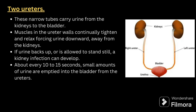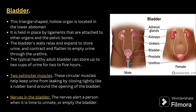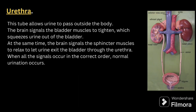The urinary bladder is a triangle-shaped hollow organ located in the lower abdomen, held in place by ligaments attached to other organs and the pelvic bones. The bladder wall relaxes and expands to store urine, and contracts and flattens to empty urine through the urethra. A typical healthy adult bladder can store up to two cups of urine for two to five hours. There are two sphincter muscles — circular muscles that keep urine from leaking by closing tightly around the opening of the bladder.